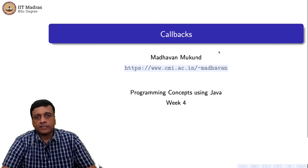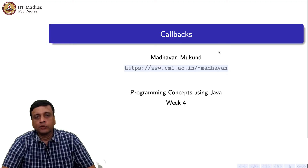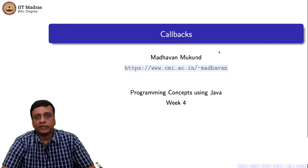We saw that interfaces combined with a private class can give you regulated access to the contents of an object. You can export a private class that implements an interface, and through the interface another object can come to know about the functions that are available. Because this is a private class exported by the object, it has access to the internal structure. So if you want to look up things inside the object, you can do it in a regulated way using this interface.